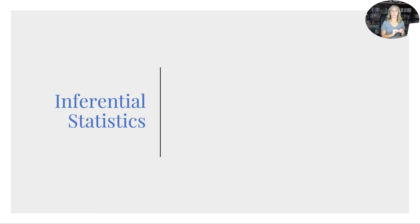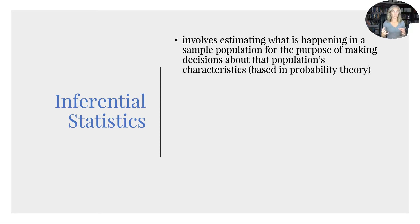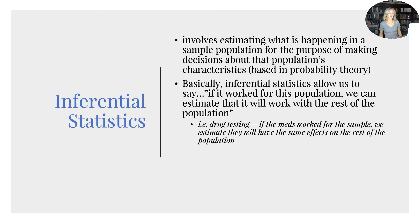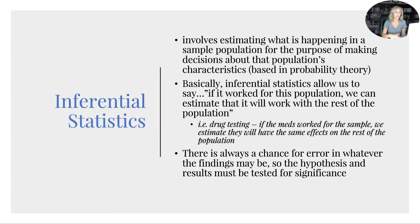Alright. So we're done talking about descriptive statistics. Now let's talk about inferential, which allow you to infer. This involves estimating what is happening in a sample population for the purpose of making decisions about the population's characteristics. It's based in probability theory. That's a lot of big terms that even I'm like, what? It just means that you get to infer from your sample to your population. That's all it means. So basically inferential statistics allow us to say, if it worked for this sample, we can estimate that it will work for the rest of the population. So for instance, drug testing, if the meds worked for the sample, we estimate they will have the same effects for the rest of the population. That's it. It allows them to generalize.